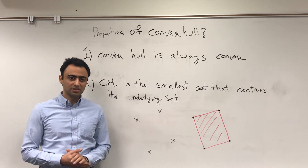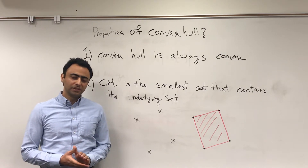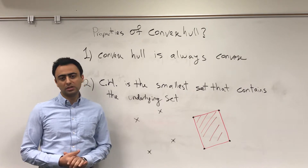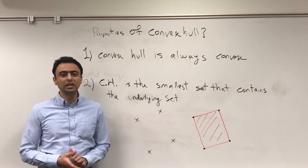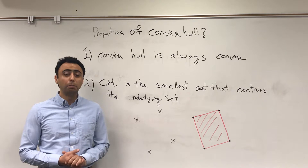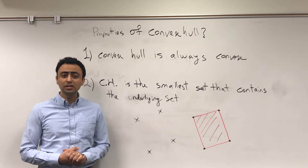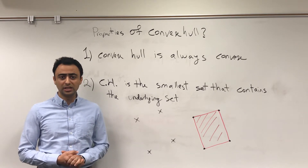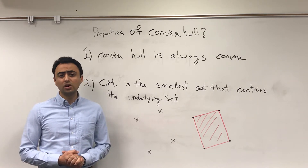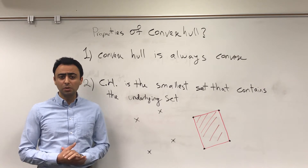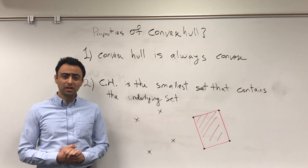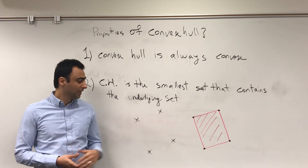If the set is already convex, the convex hull of that set is the set itself. But if the set is not convex, the convex hull of that set is the smallest convex set that contains the underlying set.